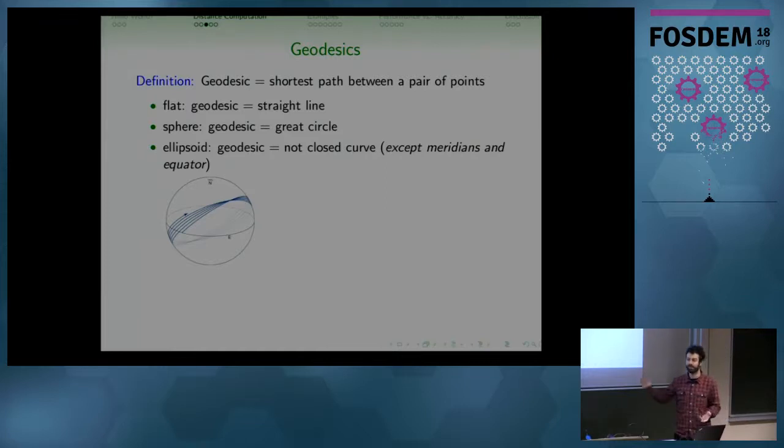Then when we compute, this is just a definition of a geodesic, so it's the shortest path between a pair of points. This is the distance that we'd like to compute. If we are on the flat, the shortest distance between two points is just a straight line. On the sphere, the shortest distance is a great circle. You get this by cutting your sphere with a hyperplane. It's also easy, trigonometric equations. But if we have an ellipsoid, then the geodesic is not a closed curve. It's something like this that goes around the Earth. And this blue line is the shortest path. If you have two points, we want to compute the distance of this blue line.